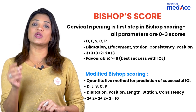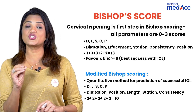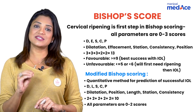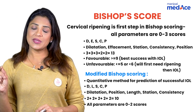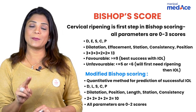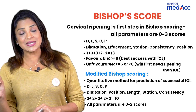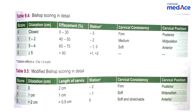Bishop's score is favourable — meaning you can go for induction of labour — if the cervix shows a score of more than 9. If it is less than 5 or 6, then it is an unfavourable cervix. Out of DESCP, the two parameters given only a maximum score of 2 are C and P: consistency and position. On the screen, you can see the difference between Bishop's and modified Bishop's score. Very simple to remember.